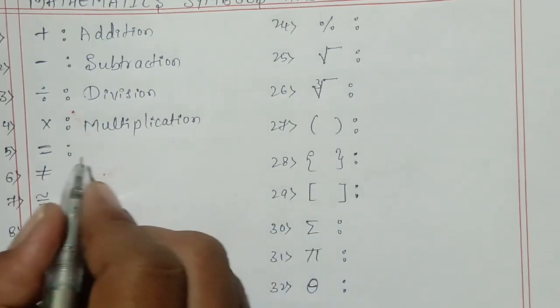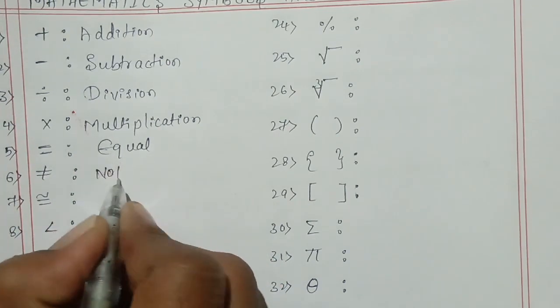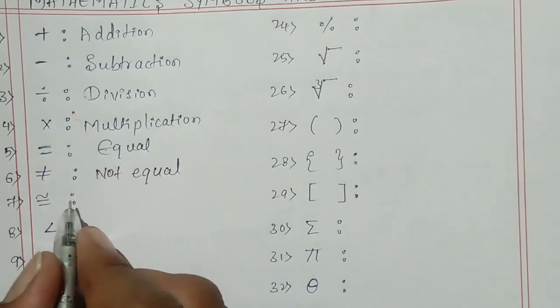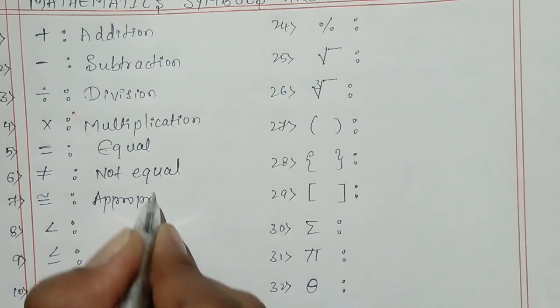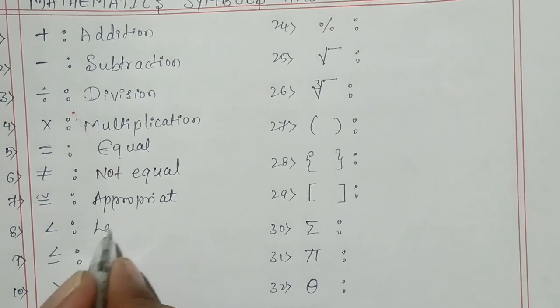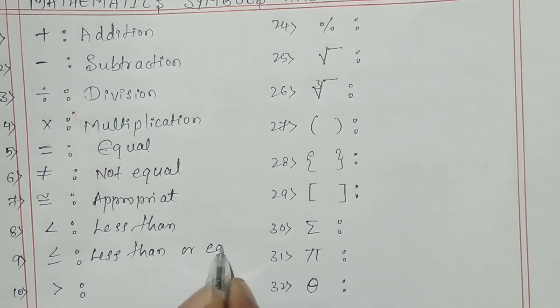This is equal. This is not equal. And what is this? This is appropriate. Next, this is less than. This is less than or equal.